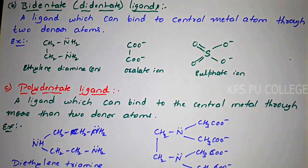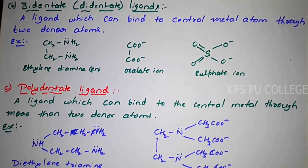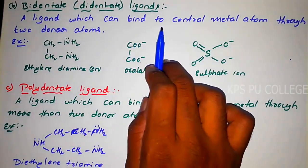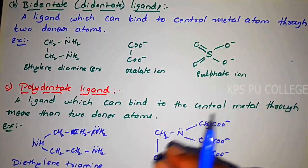The next type is the bidentate or di-dentate ligands. The first type, monodentate, has only one donor atom linked to the central metal atom. Bidentate is a ligand which can bind to the central metal atom through two donor atoms.